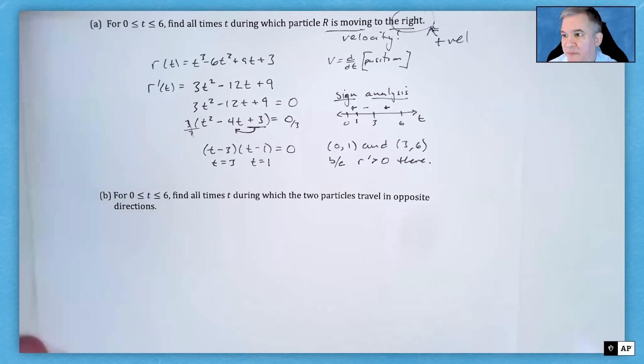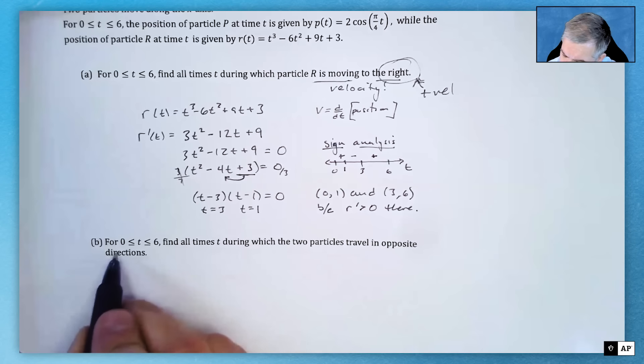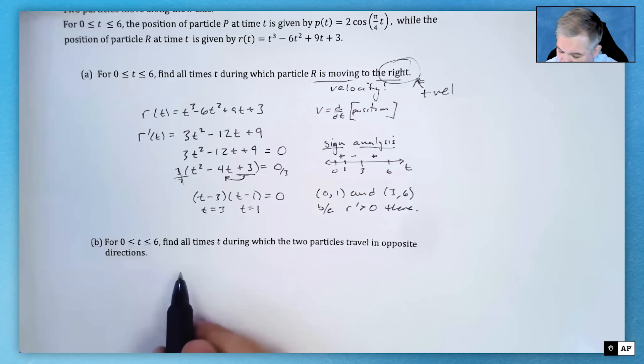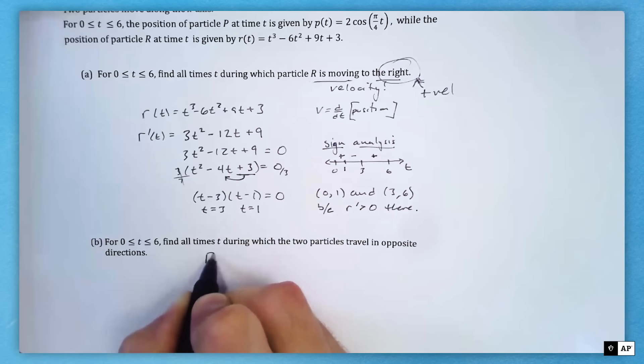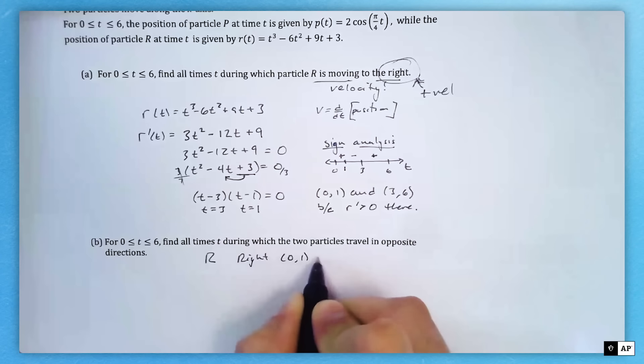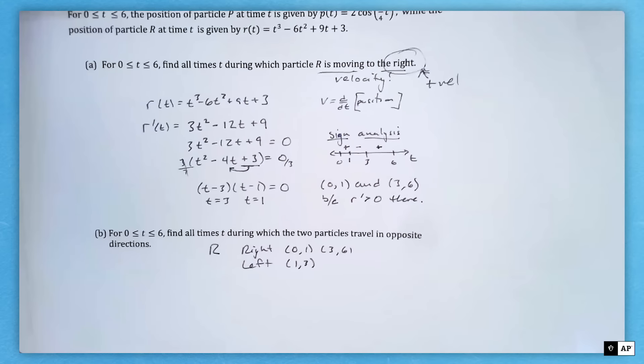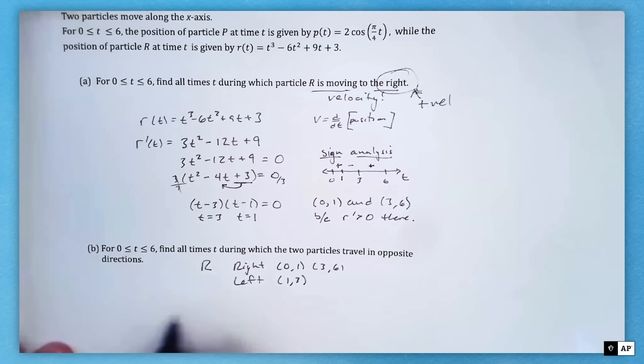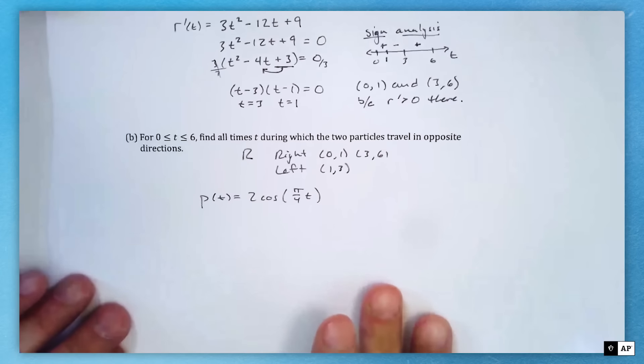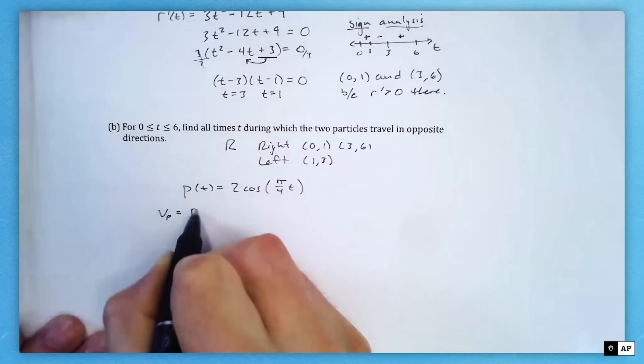I screwed up a little too far here. I need to bring P in. For part B, it says from 0 to 6, find all times during which the two particles travel in opposite directions. Just because of that, I'm going to bring in that R is going right on (0,1) and (3,6) and left on (1,3). I'm going to need that information from part A. The other thing I need is P(t), that 2 cosine of π/4 times t. Same idea, I wanted the direction it's moving, I'm going to need my velocity of P.